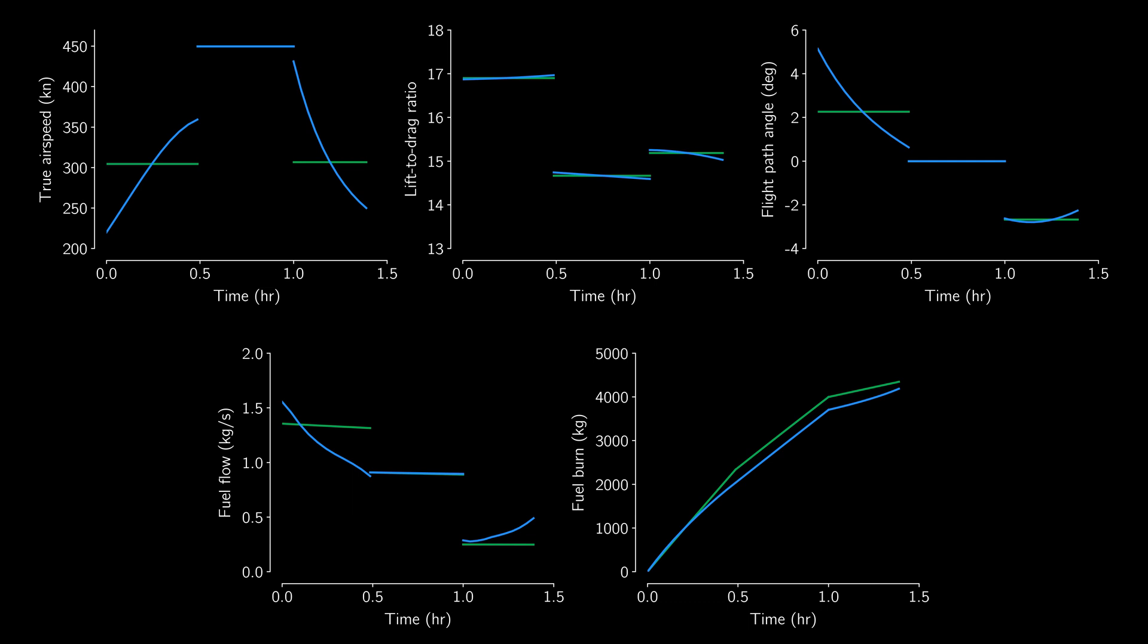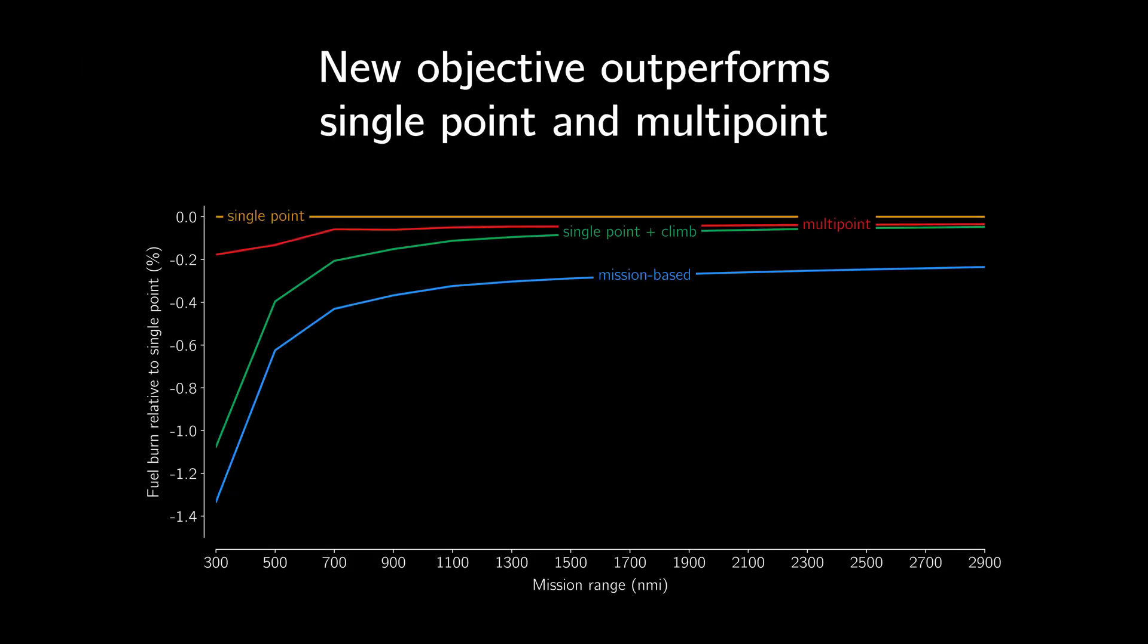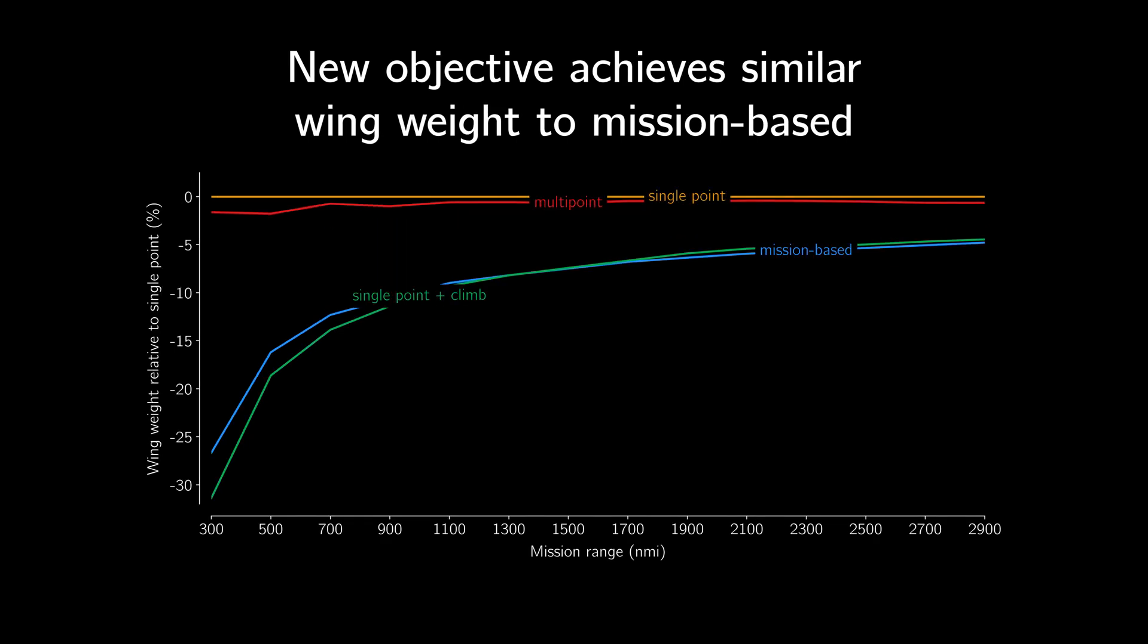We can look at the same plots as before to see how well this new objective performs. For all mission lengths, it outperforms both single and multipoint on the fuel burn objective. Interestingly, the wing weight of this new objective is almost identical to mission-based optimization. This is all done with a small fraction of the aerostructural analyses required for mission-based optimization. The new objective function is flexible in that it can be extended to multipoint in cruise by using multiple parallel cruise segment approximations, and to more complex missions by using additional sequential segments.